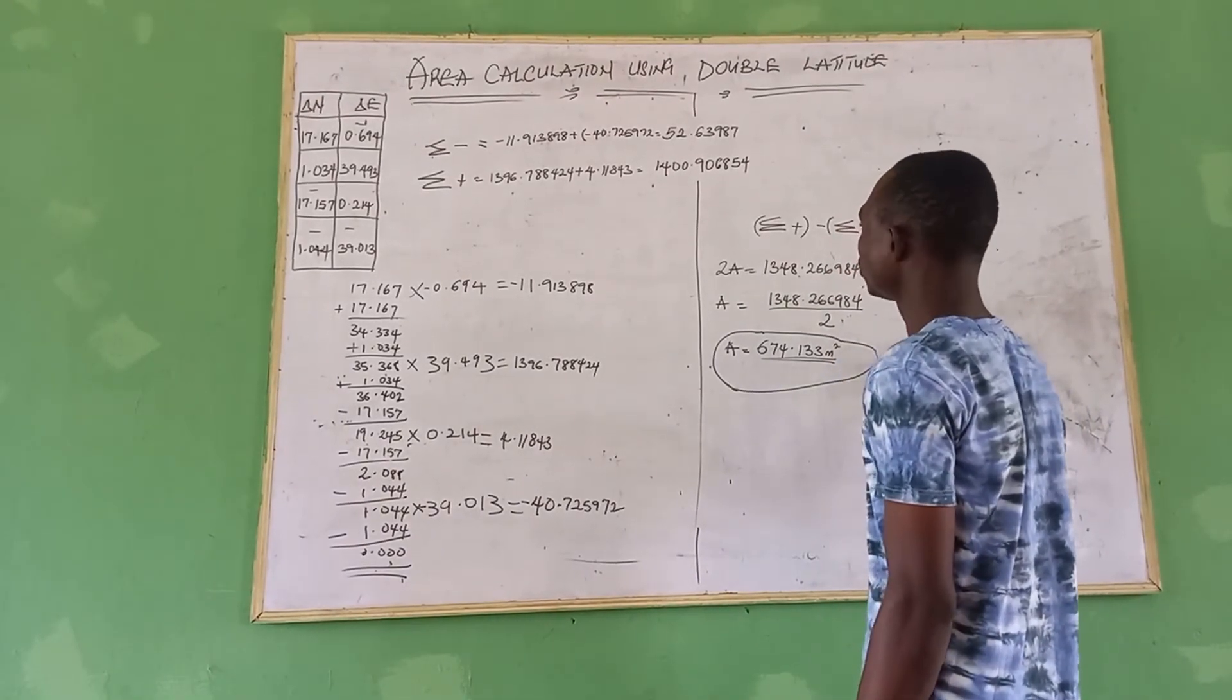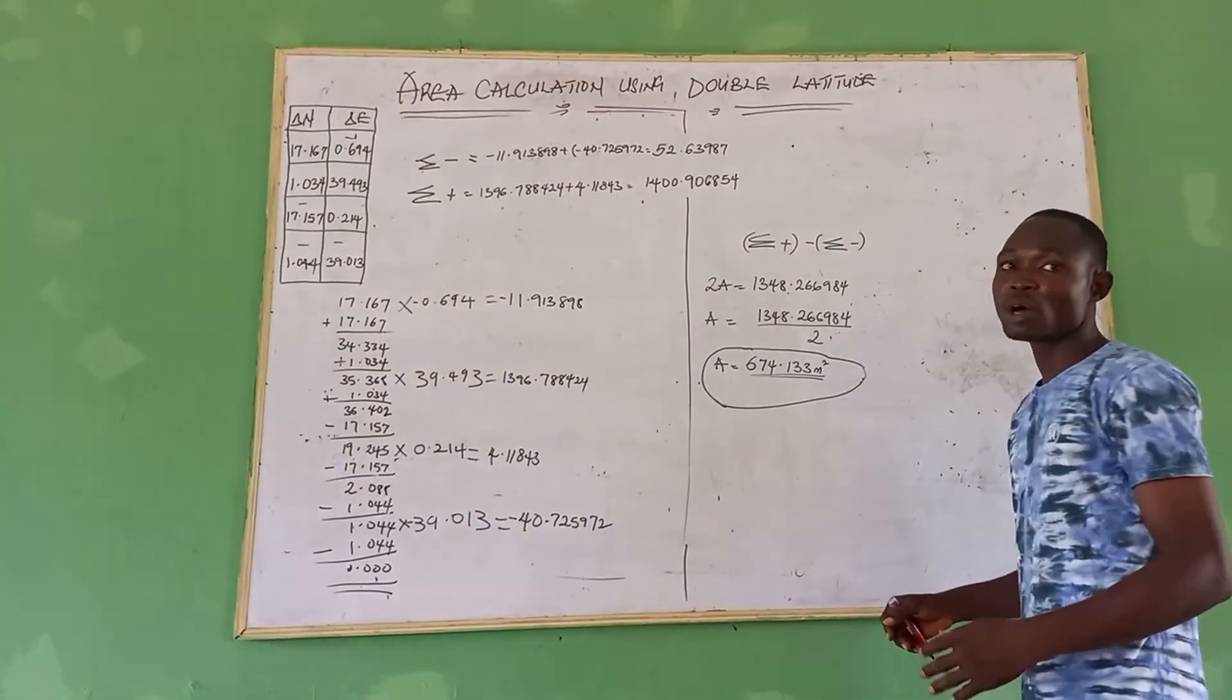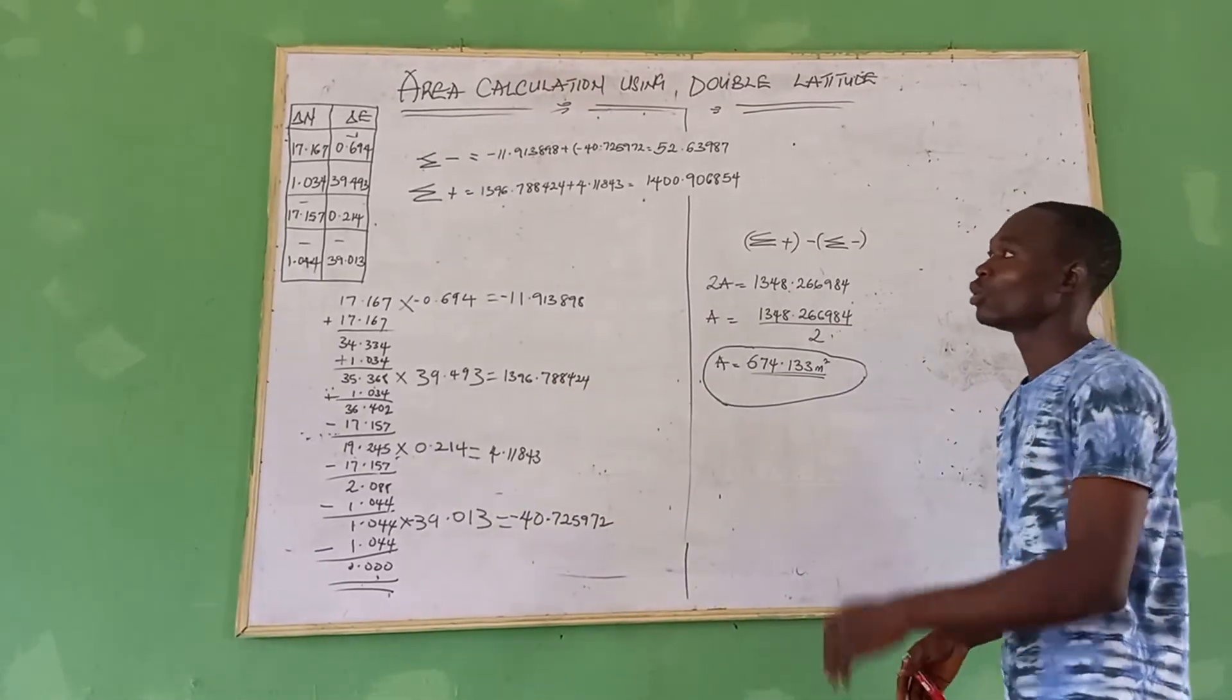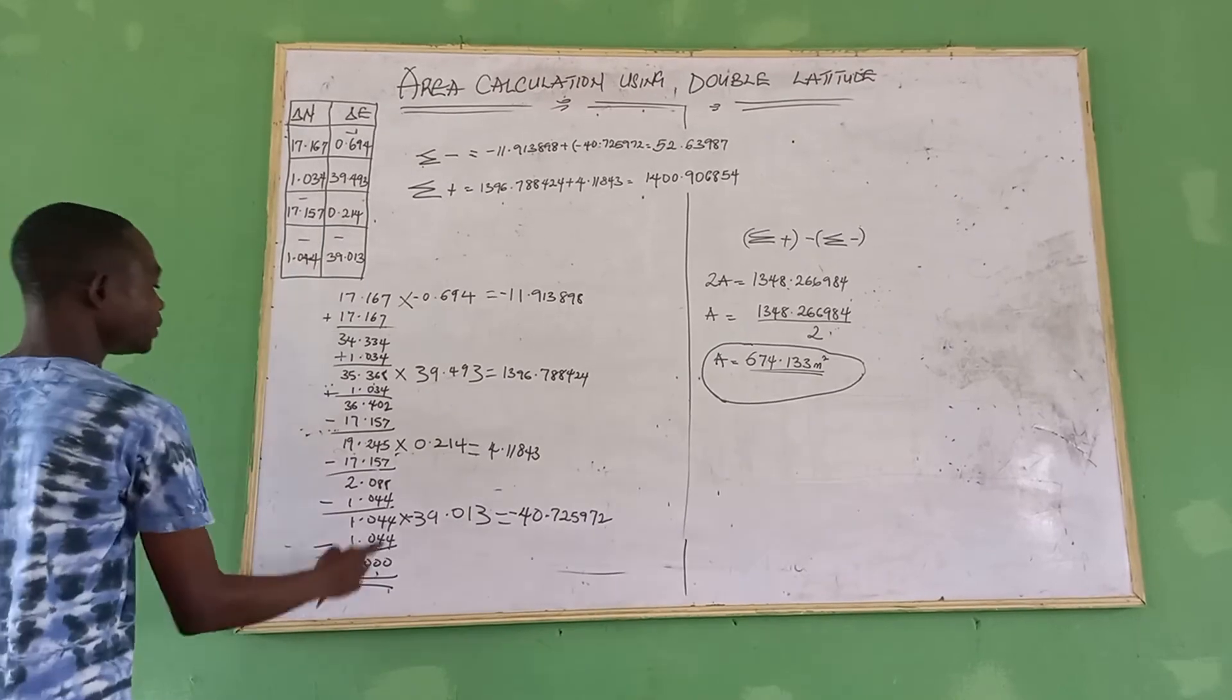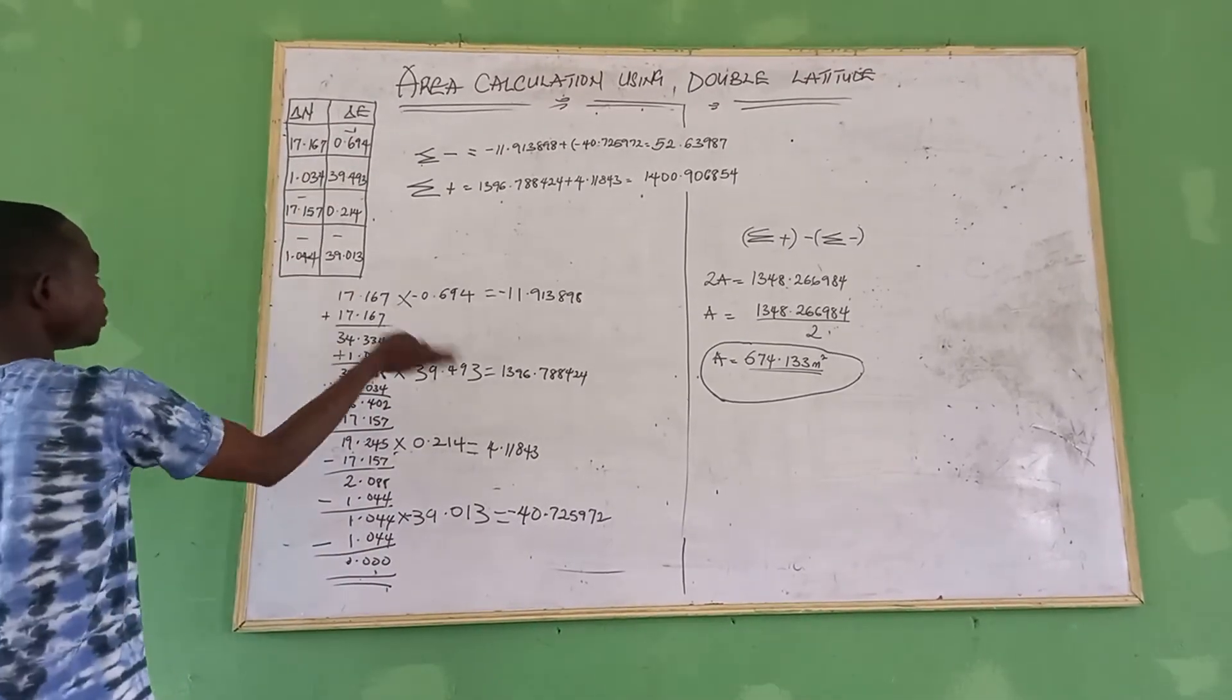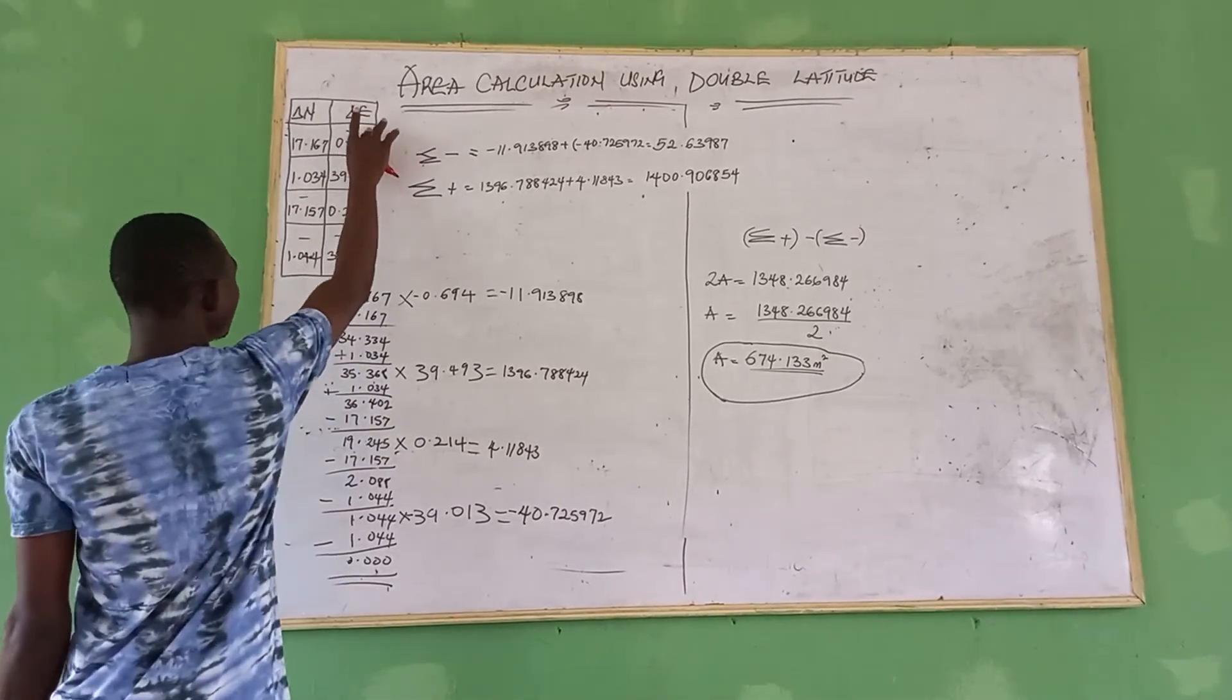But for your area computation using double departure, it's going to be the other way around. You know we use the easting values to represent this, while this is represented by the northing. It will be the other way around, that this one is coming first before this.